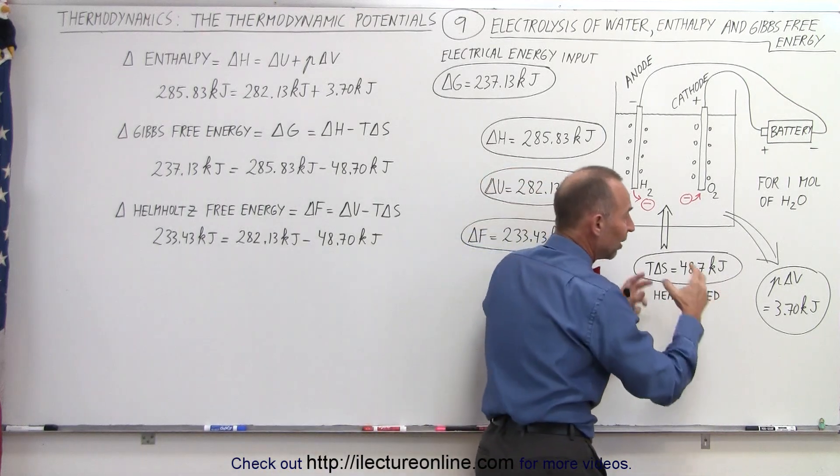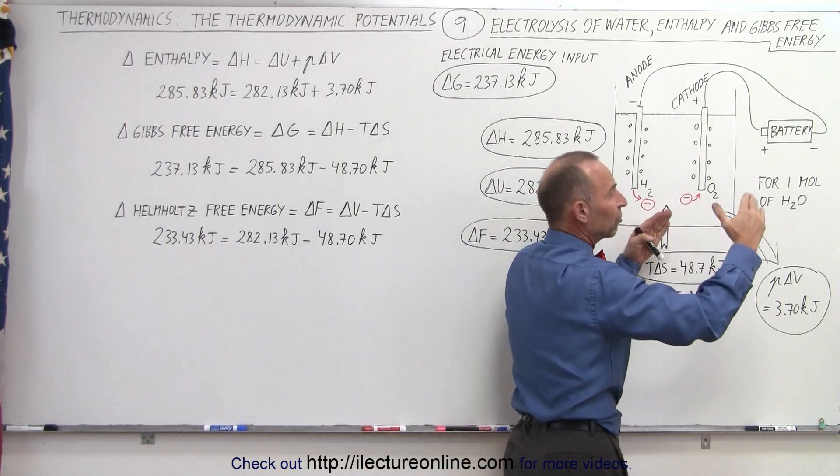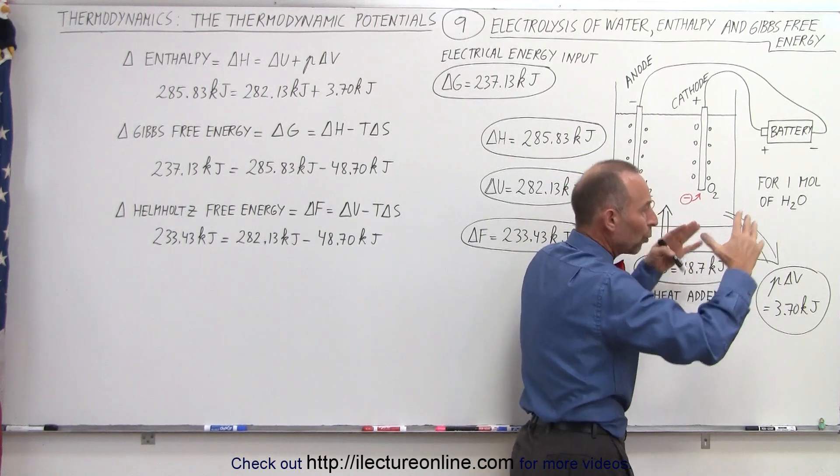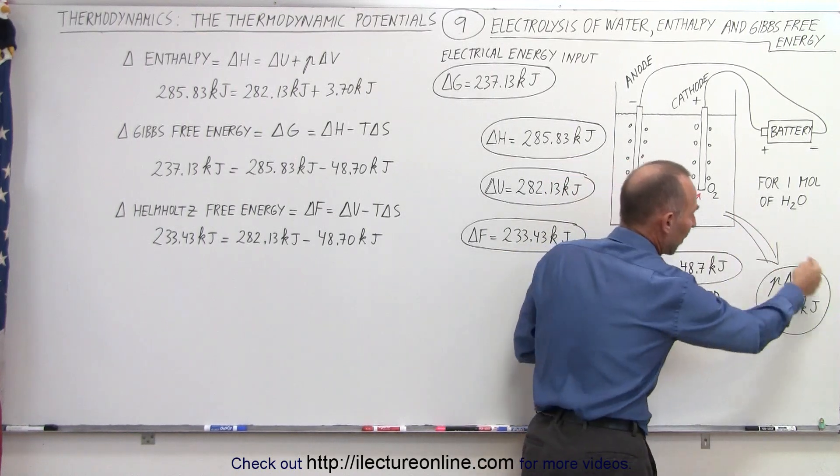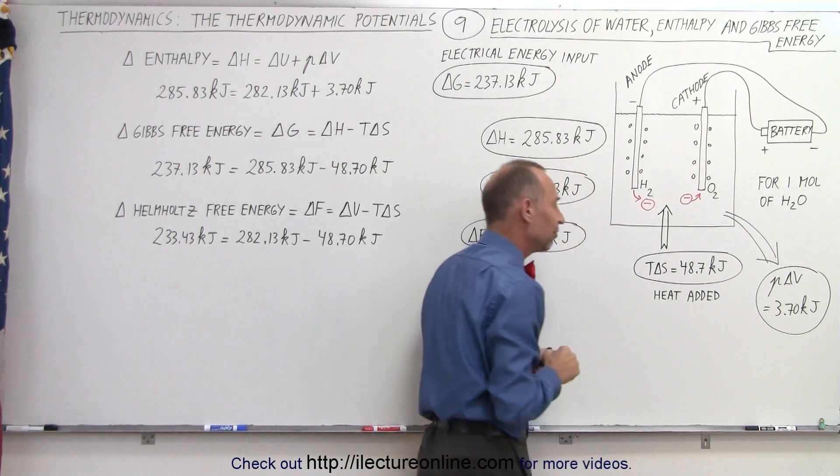And so what happens is, when the gas is produced, we push against the atmosphere, we're doing work. The system is doing the work, it's done by the system, so we have a positive P delta V quantity.